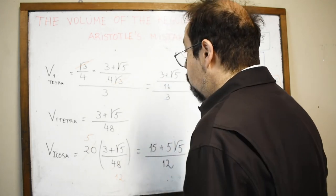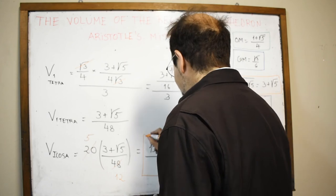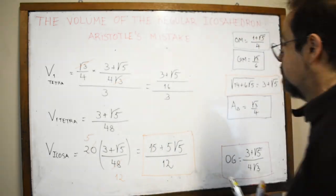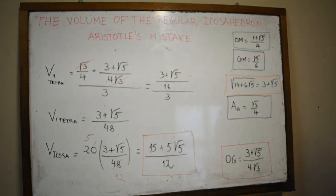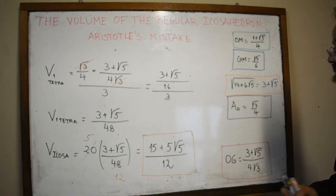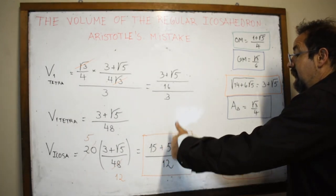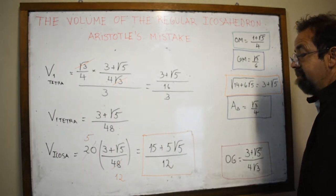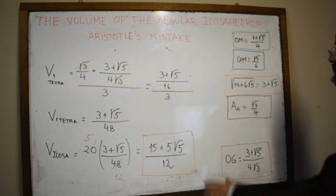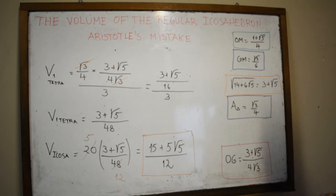That's the volume of an icosahedron of edge 1. That very simple number is of the same form as the golden number — which was 1/2 + (1/2)√5 — the same form.